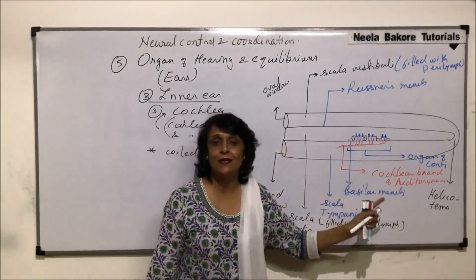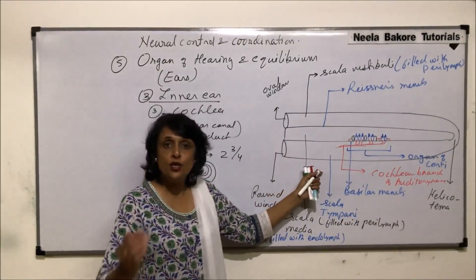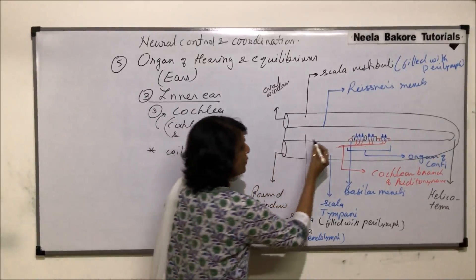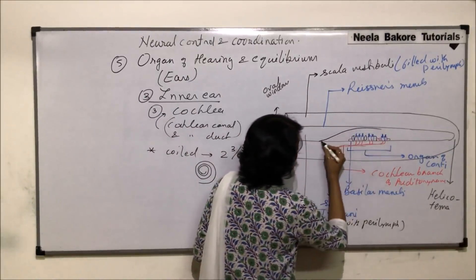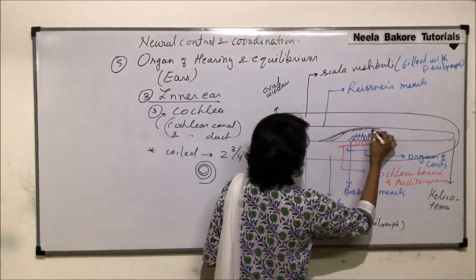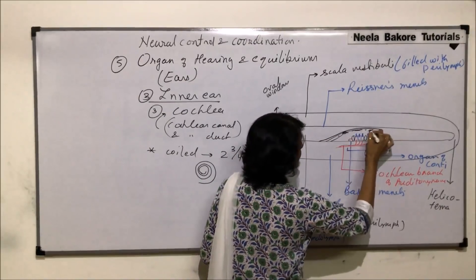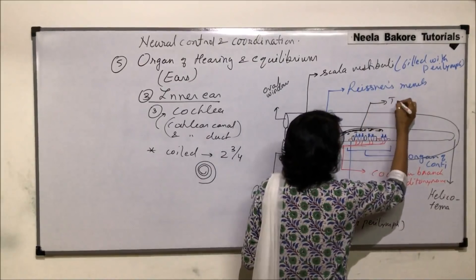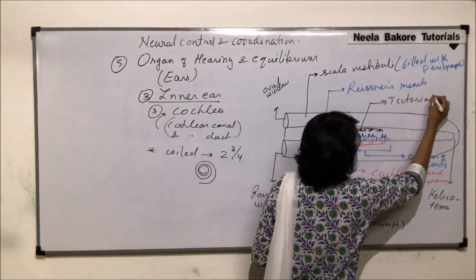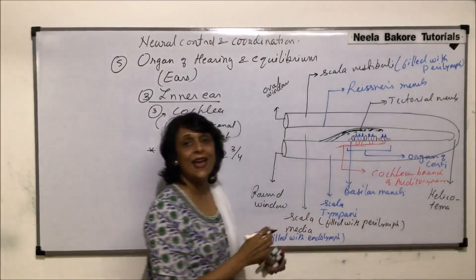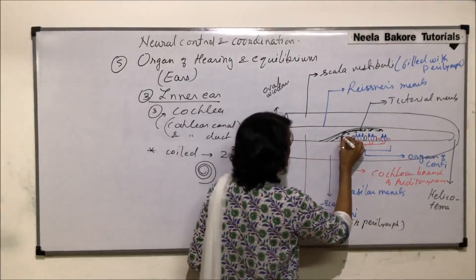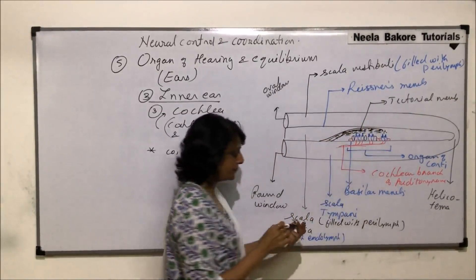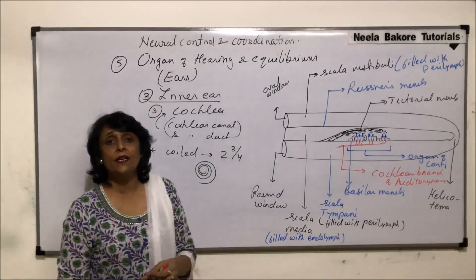Just before the organ of Corti there is a membrane that arises from the basilar membrane. This is a gelatinous membrane known as the tectorial membrane. The sensory hairs are actually embedded in this gelatinous tectorial membrane.